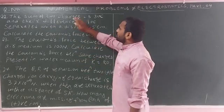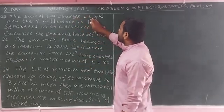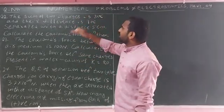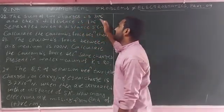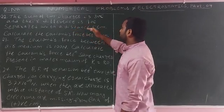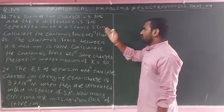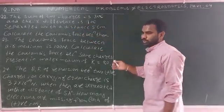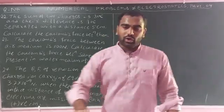Question number 22: The sum of two charges is 30 coulombs and the difference is 10 coulombs. They are separated by a distance of 5 centimeters. Calculate the Coulomb's force between them.